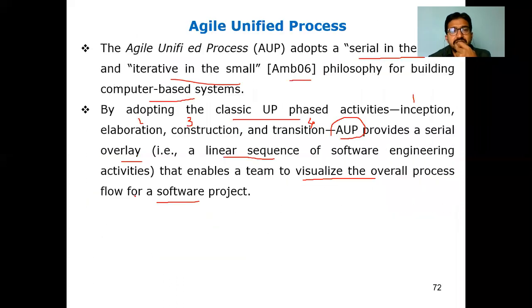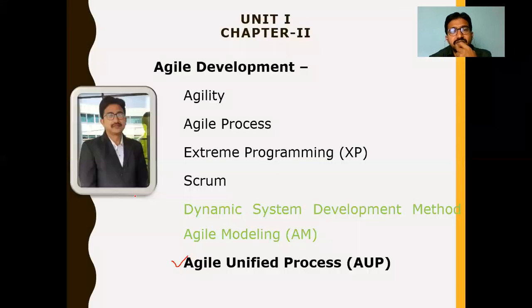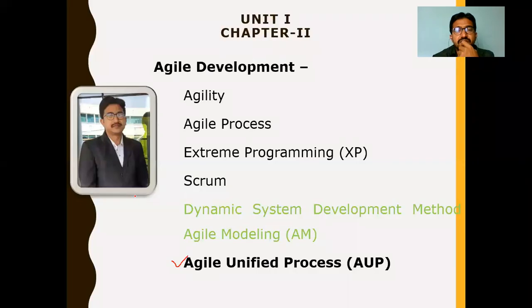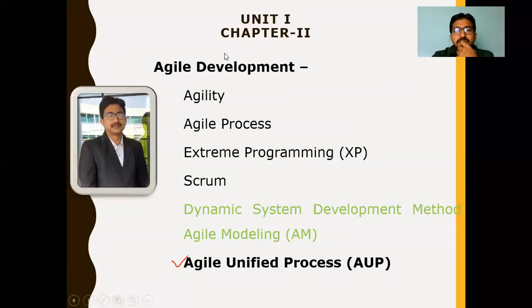These are the six framework activities in Agile Unified Process: modeling, implementation, testing, deployment, configuration and project management, and environment management. If you have any doubts, please let me know. That's about the Agile Unified Process.